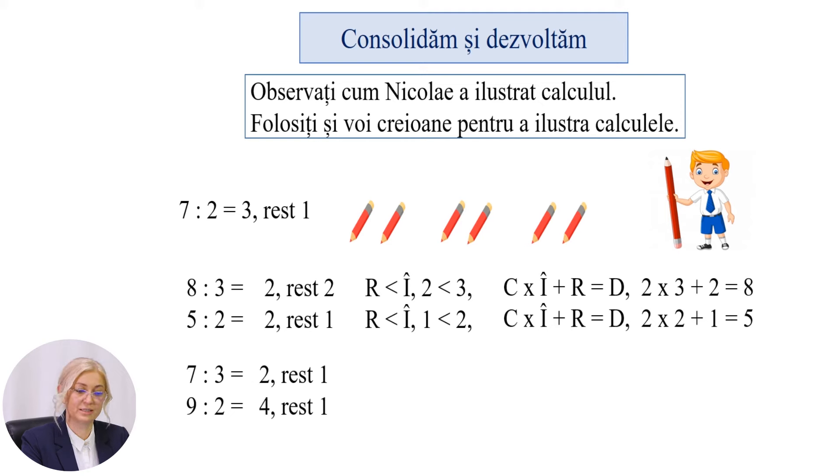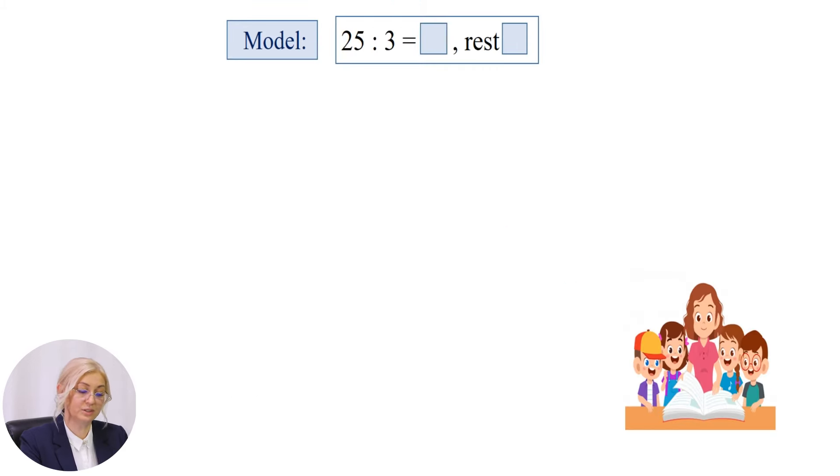La primul exercițiu am obținut 2 rest 1. La cazul al doilea, 4 rest 1. 10 împărțit la 3, 12 împărțit la 5. Verificați: 3 rest 1, 2 rest 2. 19 împărțit la 6 și 17 împărțit la 4. Rezultatele sunt 3 rest 1 și 4 rest 1.